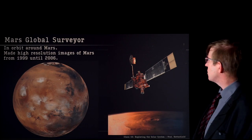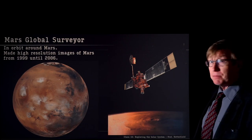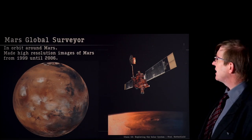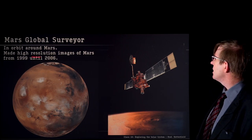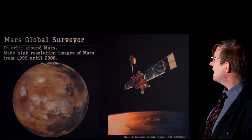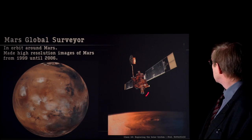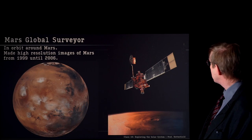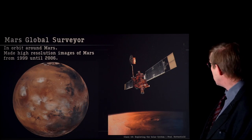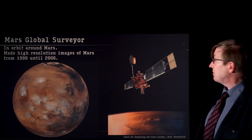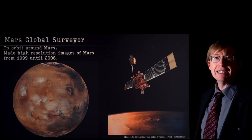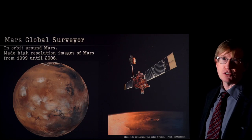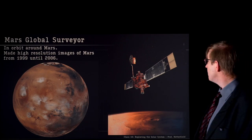One very cool Mars mission was the Mars Global Surveyor. It's currently in orbit around Mars. It made high-resolution images of Mars from 1999 until 2006, with a large camera or small telescope mounted on it and solar panels for power. For seven years it took really great, highly detailed images of the entire surface of Mars.